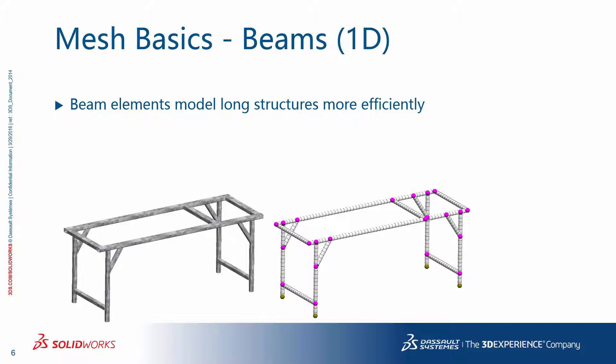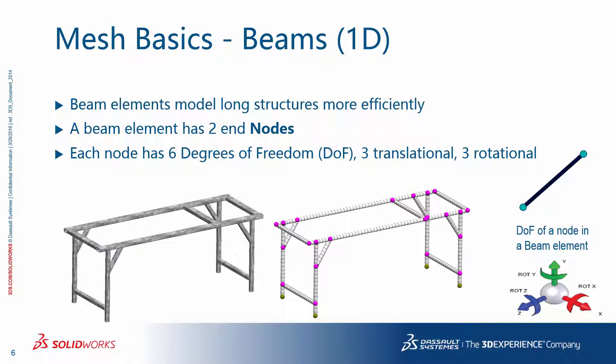One-dimensional, or beam elements, model long structures more efficiently. The effect of the cross-section, in terms of its area and moments of inertia, is incorporated in the element formulation of its stiffness. A beam element has two end nodes. In general, each node has six degrees of freedom — three translational and three rotational. Special 1D elements will have fewer degrees of freedom. For example, a truss element has three translational degrees of freedom only.